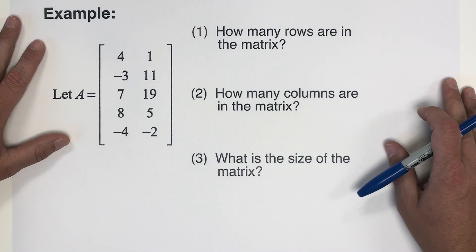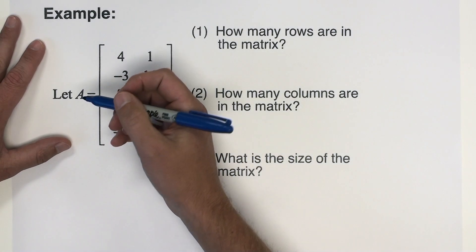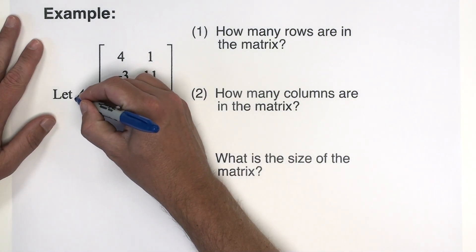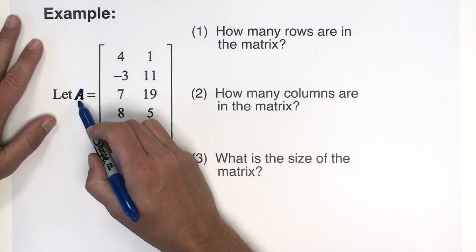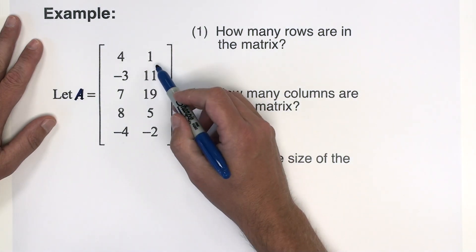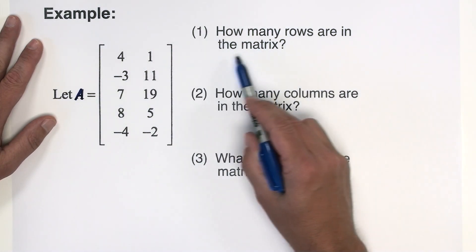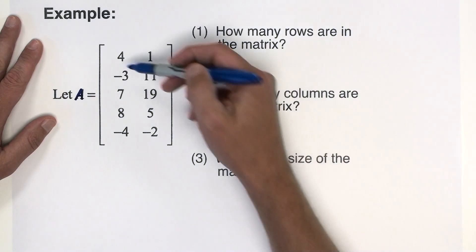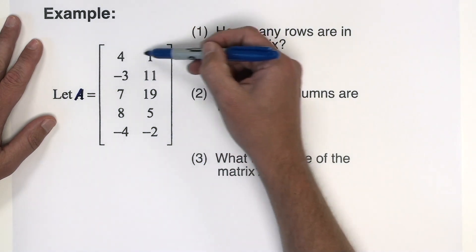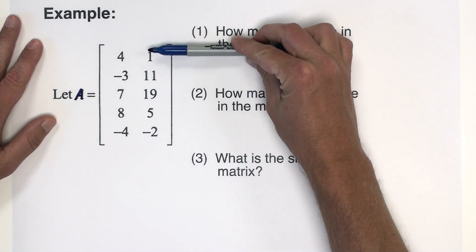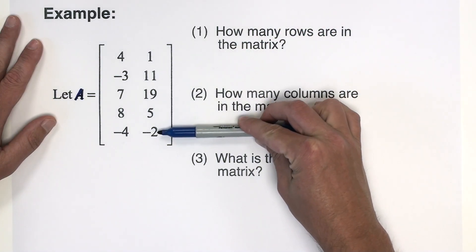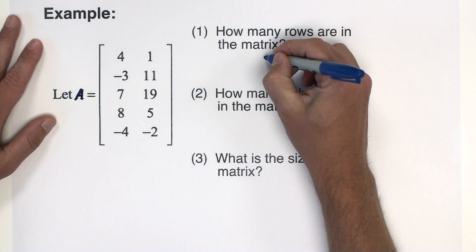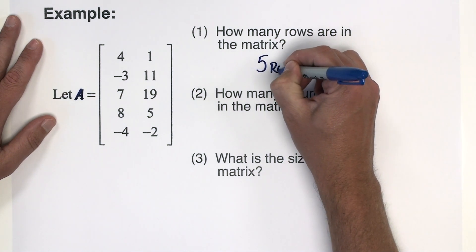Let's jump right into an example problem. Here we've got a matrix. Typically matrices are named with capital letters, so I've called this matrix A. First question is how many rows are in the matrix? Rows go across horizontally, so how many horizontal lists of numbers do we see? There's one, two, three, four, and five. So this matrix has five rows.